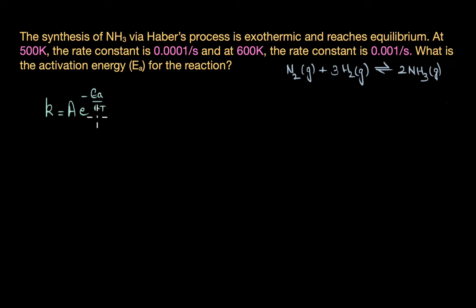R is a constant, and the term e power minus Ea by RT refers to the fraction of molecules that have kinetic energy greater than the activation energy. We can also write this equation in this form where ln K equals minus Ea by RT plus ln A.